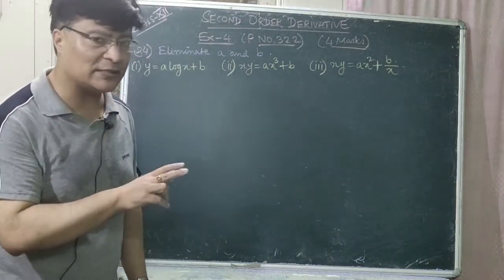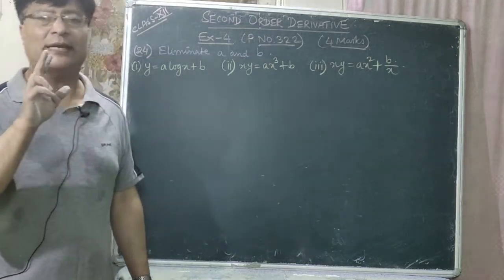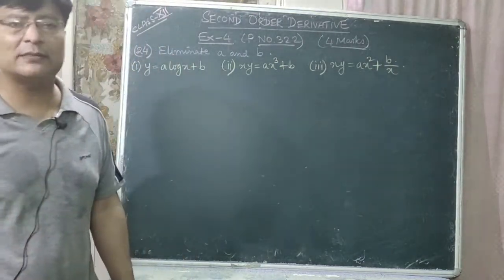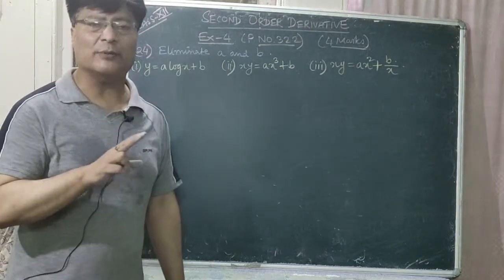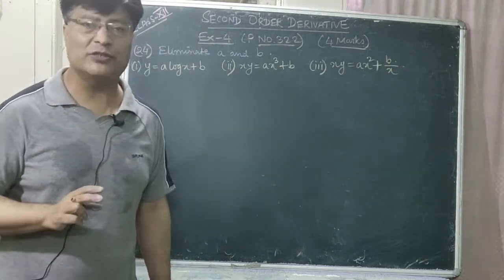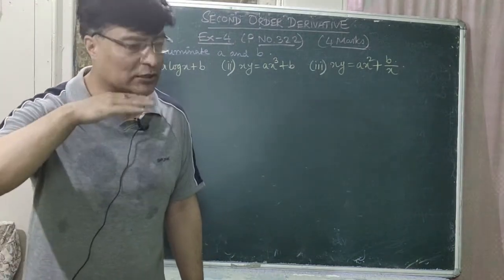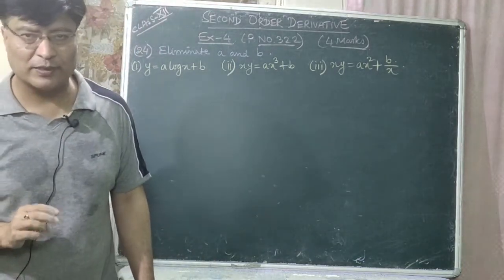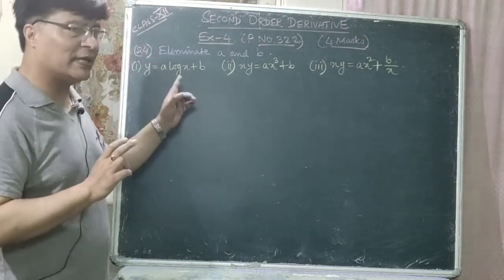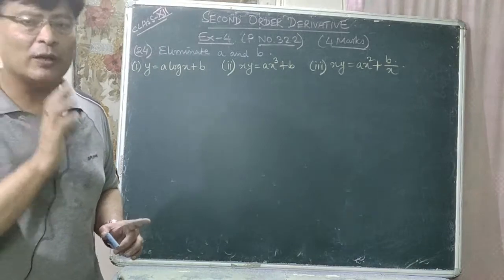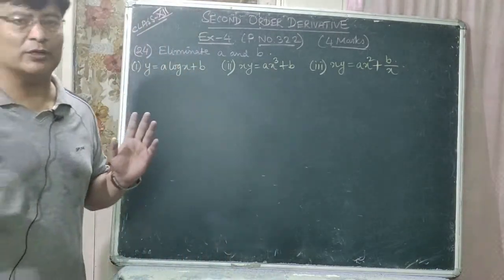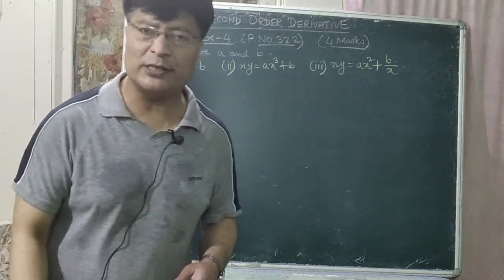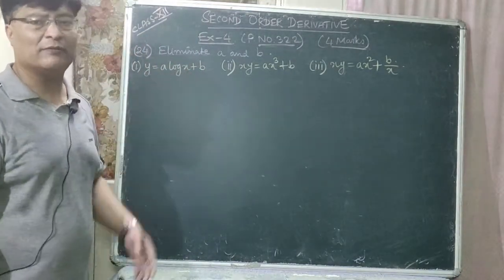If two constants are present, you have to form a second order differential equation. To eliminate one constant, you form a first order differential equation. Since we are asked to eliminate both a and b, we must form the second order differential equation. The question is: form the differential equation eliminating a and b from the given equation.